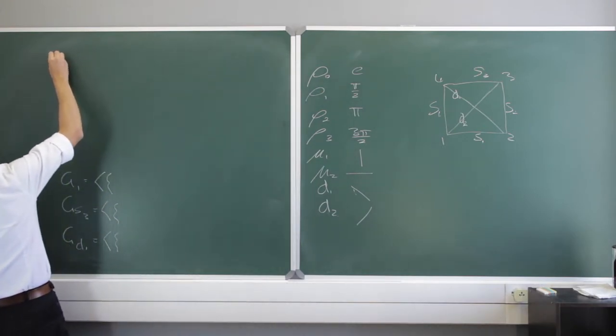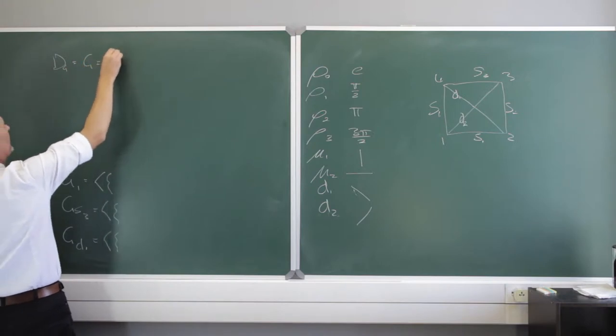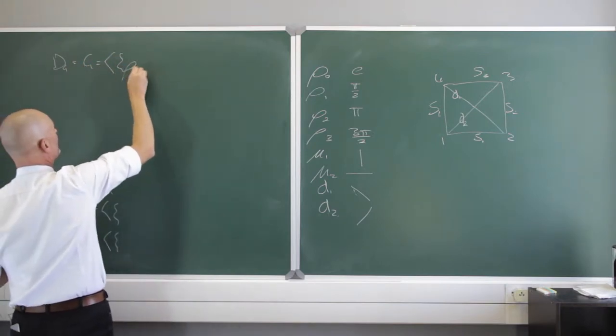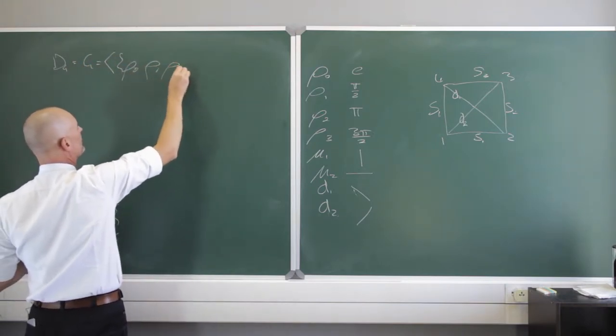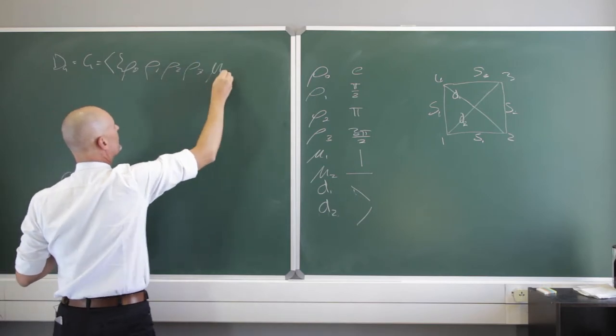So I'm going to suggest that I have my group. It's actually called D4, and it has these elements: rho 0, rho 1, rho 2, rho 3, mu 1, mu 2, and delta 1 and delta 2.